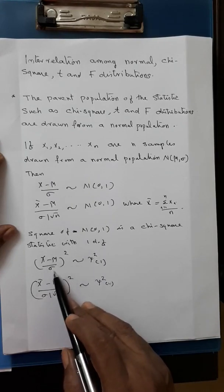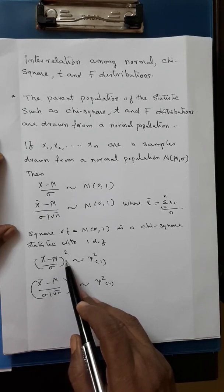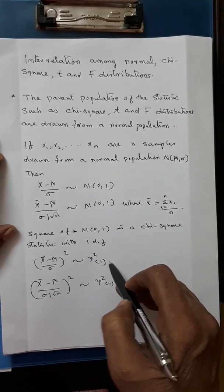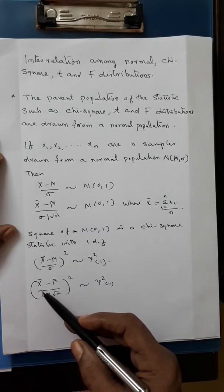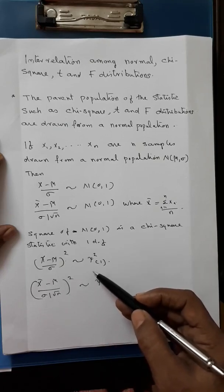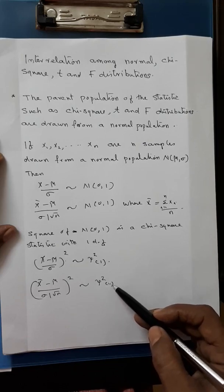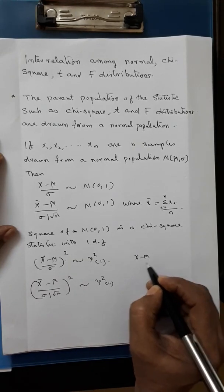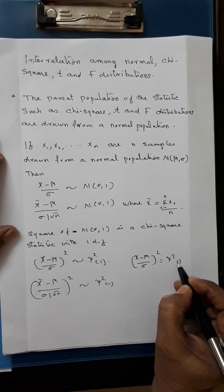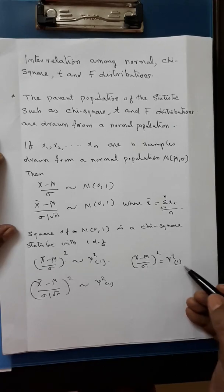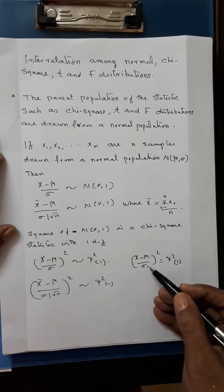Therefore, (x minus mu by sigma) whole square is a chi-square statistic which follows a chi-square distribution with one degree of freedom. Again, (x-bar minus mu by sigma by root n) whole square is another chi-square statistic which follows a chi-square distribution with one degree of freedom. So we can write (x minus mu by sigma) whole square equals chi-square(1). A statistic means a function of samples drawn from a random variable.